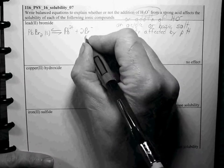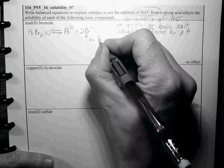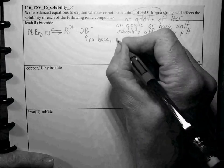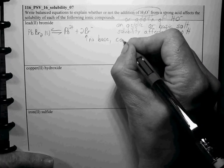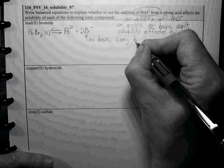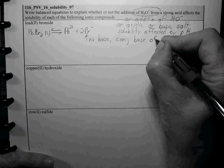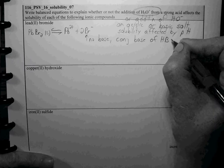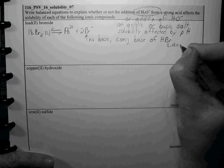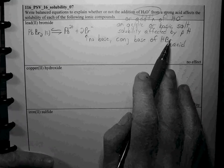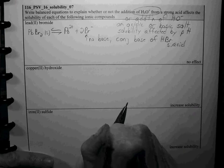Br- has no base strength because it's the conjugate base of HBr, which is a strong acid and therefore there's no tendency of Br- to act as a base.